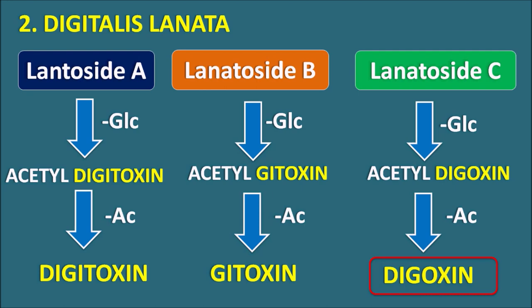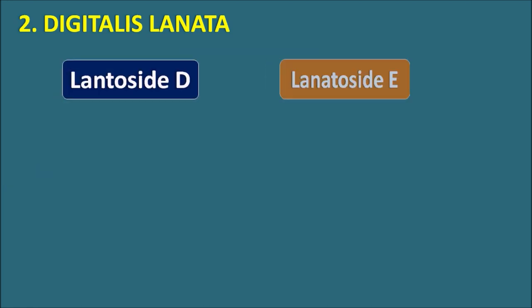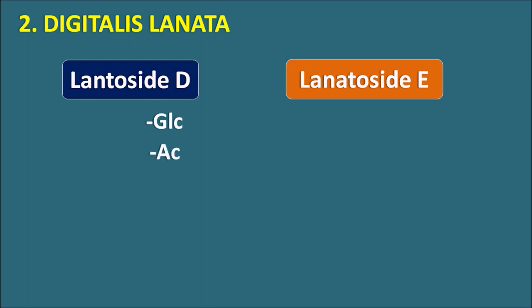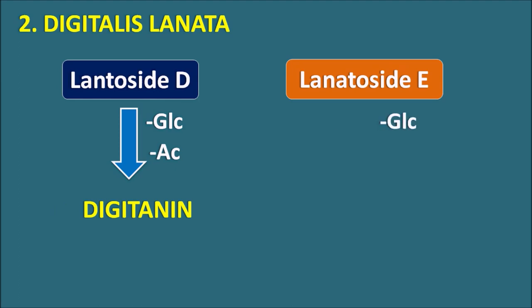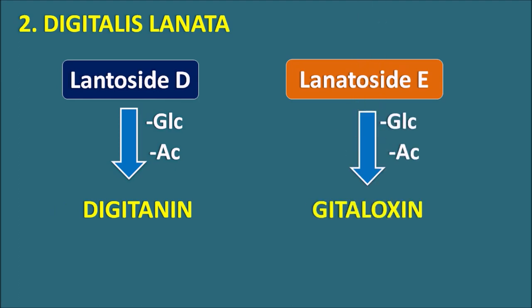Digoxin is more therapeutically important than digitoxin because the digitoxin dose cannot be easily fixed whereas the digoxin dose can be easily fixed, and an antidote is available for digoxin toxicity. Digoxin is present only in Digitalis lanata, which is why the glycoside content of Digitalis lanata is expressed in terms of lanatoside C. Lanatosides D and E on removal of glucose and acetyl moieties give digitoxin and gitoxin respectively. Both Digitalis purpurea and Digitalis lanata are used as cardiotonics, but the glycoside content is higher in Digitalis lanata.